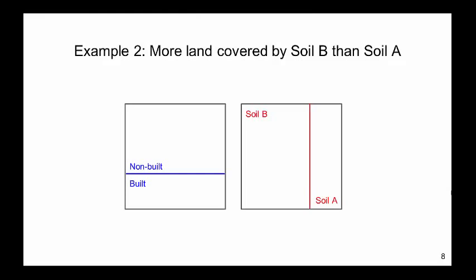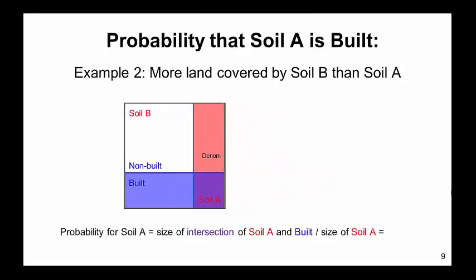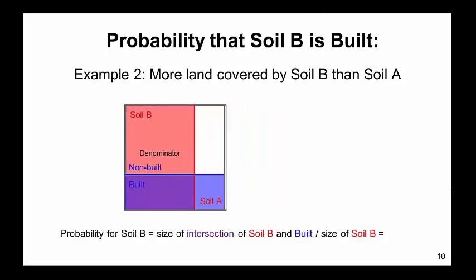Now let's look at an example in which there is more of soil B than soil A. In determining the probability that soil A is built, the numerator and denominator are both smaller than in example 1. The resulting probability is 0.3 because 30% of soil A is built. The numerator and denominator for soil B are both larger than in example 1, but the resulting probability is again 0.3 because 30% of soil B is built.